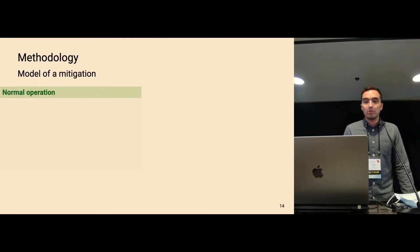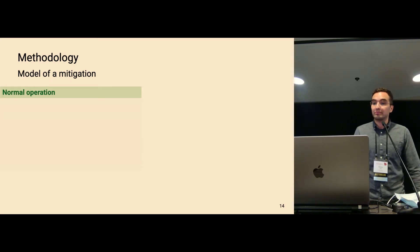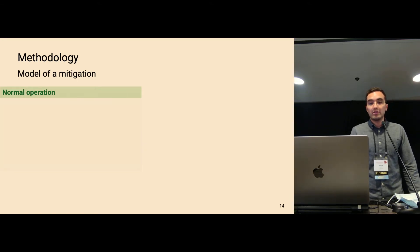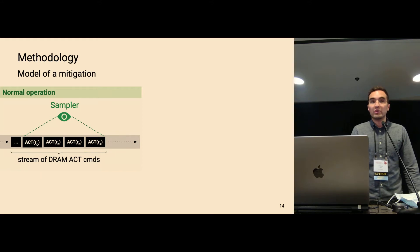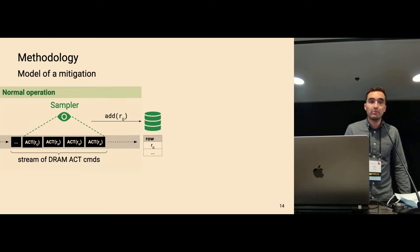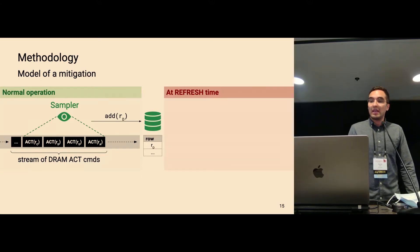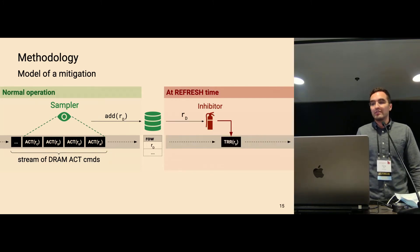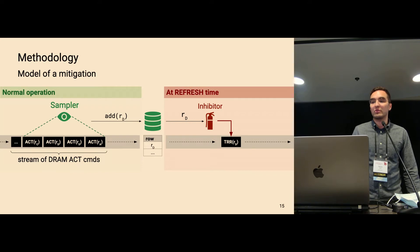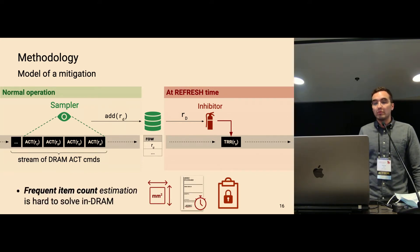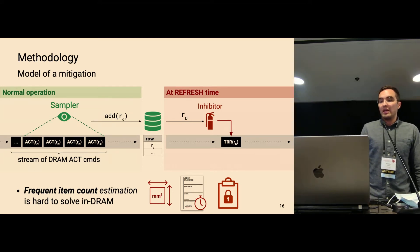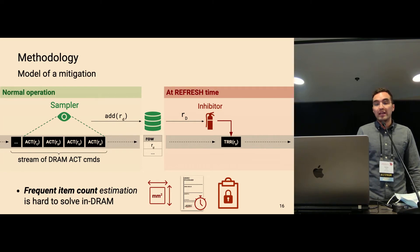Let's now switch the perspective to the view of the defense, of the mitigation. So I will now explain how a mitigation works, a deterministic one, but there are also probabilistic ones. So during normal activation, there's a component in the device called a sampler, looks at the DRAM activation commands, and tries to estimate the row that has been accessed most frequently. So in this example, it would be row D. And then stores this information in a data structure. And then at refresh time, there's another component called the inhibitor that takes this estimate, so here, row D, and then sends a preventive, so an additional refresh called target row refresh to that row before any bit flips can happen.